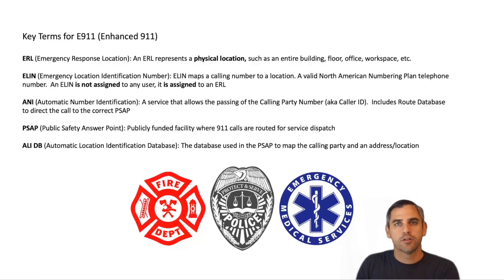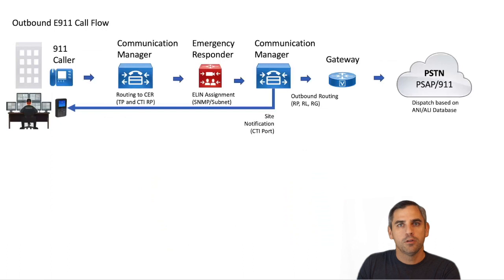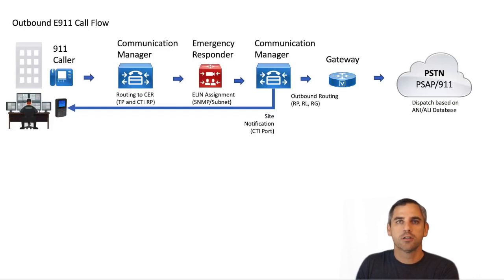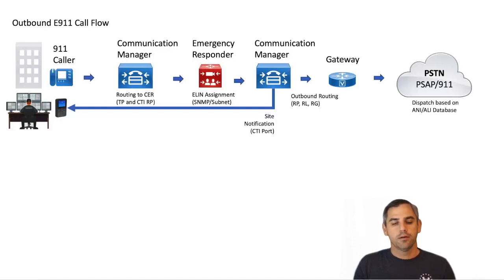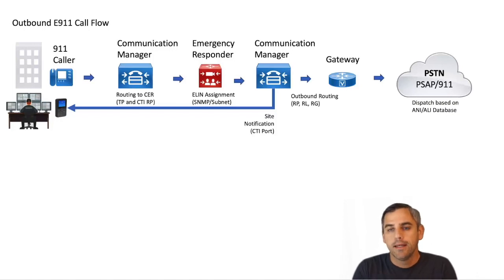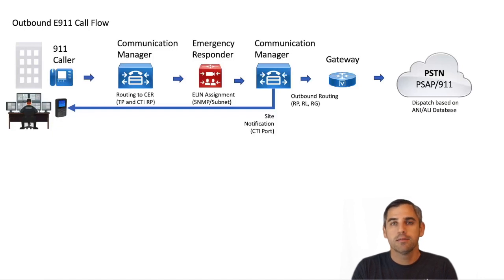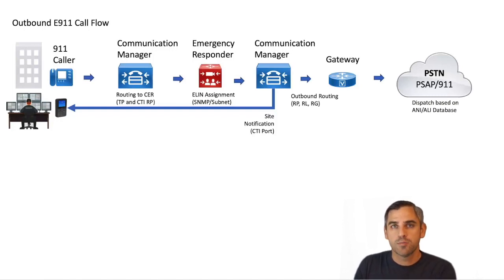Now let's look at the call flow, which will help you understand Cisco's architecture and how intelligence in call routing makes E911 work. Emergency Responder shouldn't sit in line for all call flows — that wouldn't be scalable or optimal. It only sits in line between your servers and gateways when someone calls 911. This is accomplished through calling search spaces, translation patterns, and CTI route points.